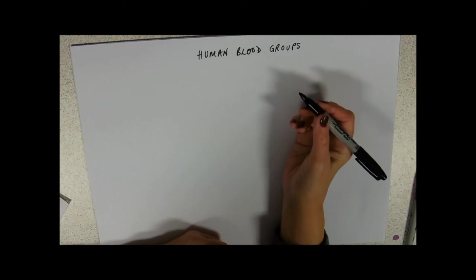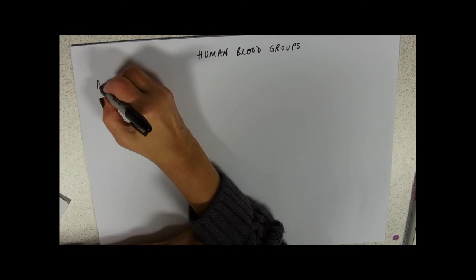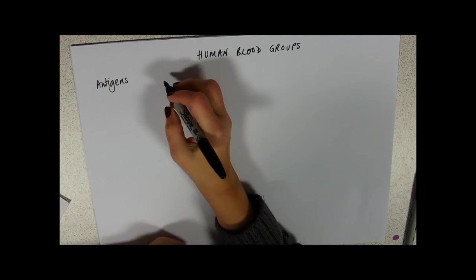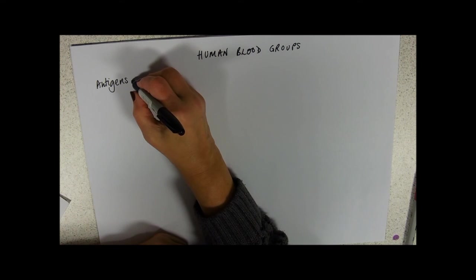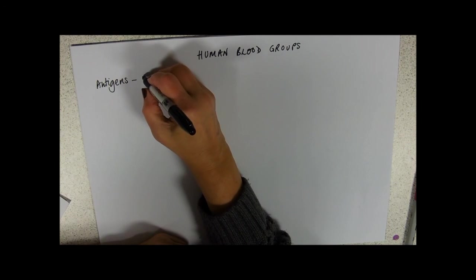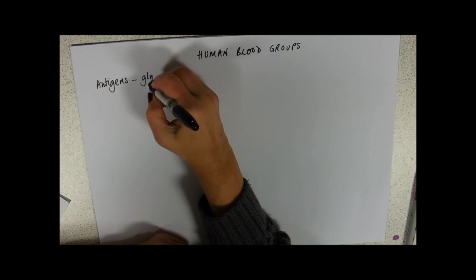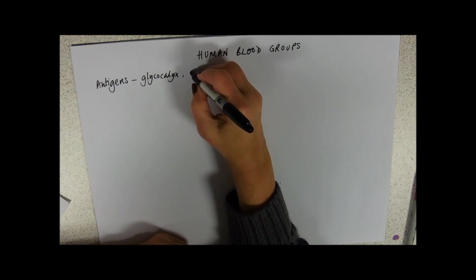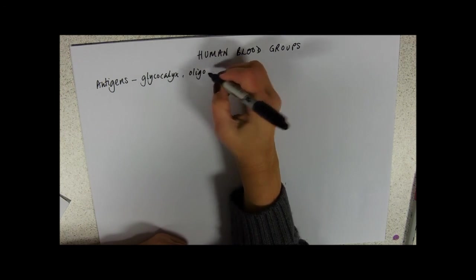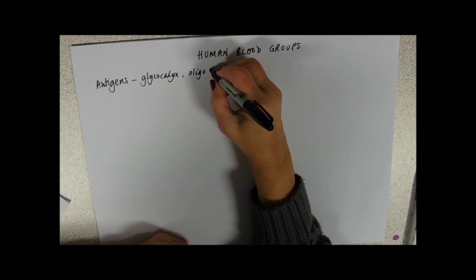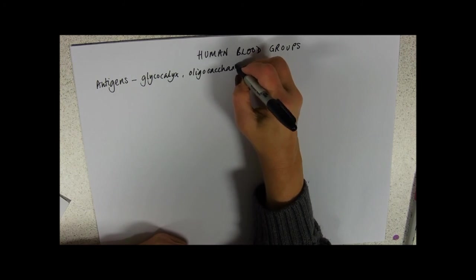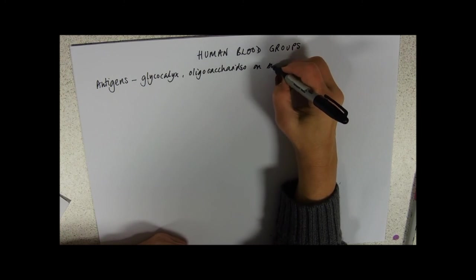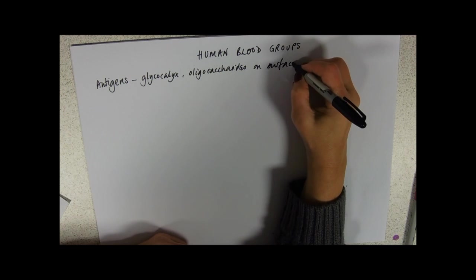Human blood groups depend on antigens. And just a bit of synoptic here, these are part of the glycocalyx and therefore they are oligosaccharides, which means short chains of monosaccharides on the surface of red blood cells.